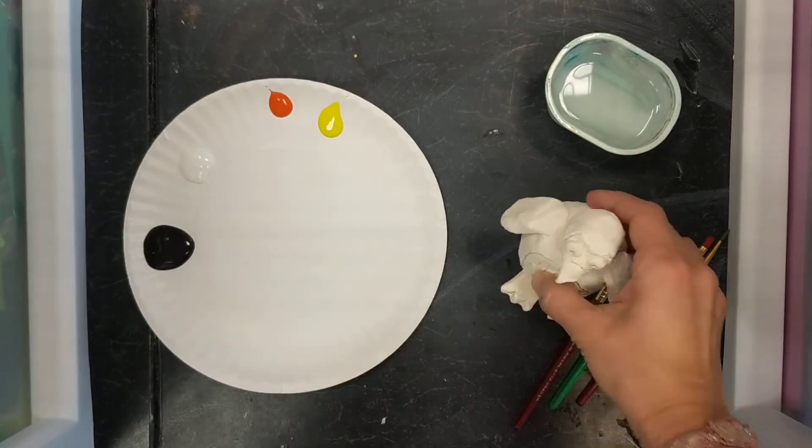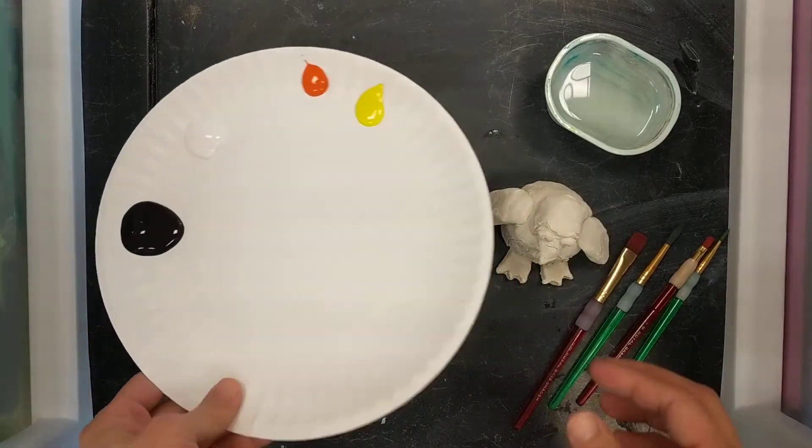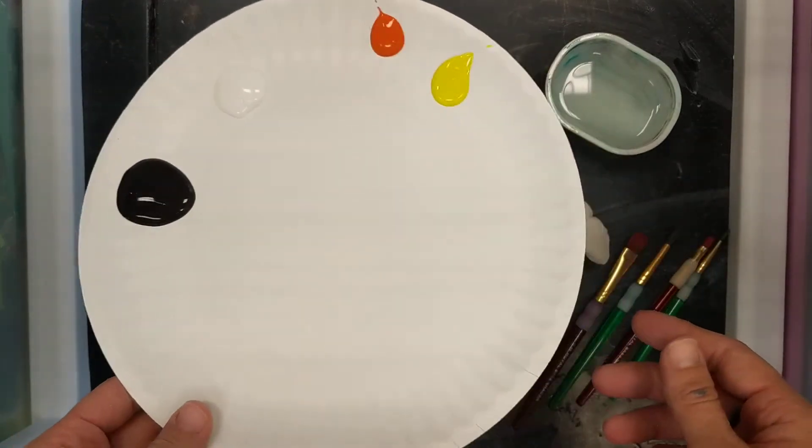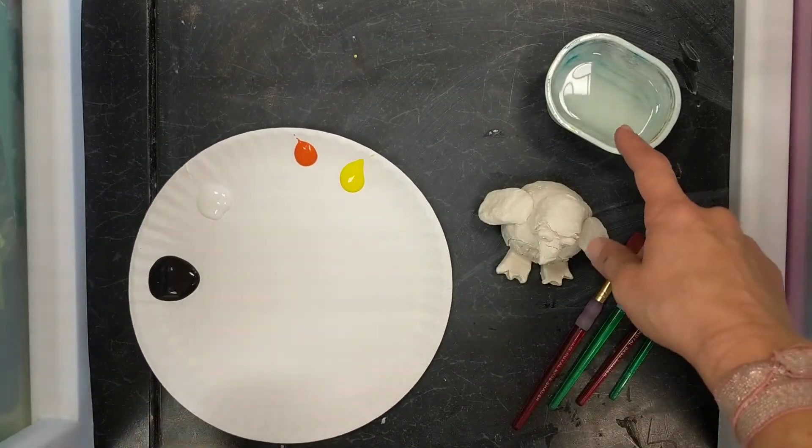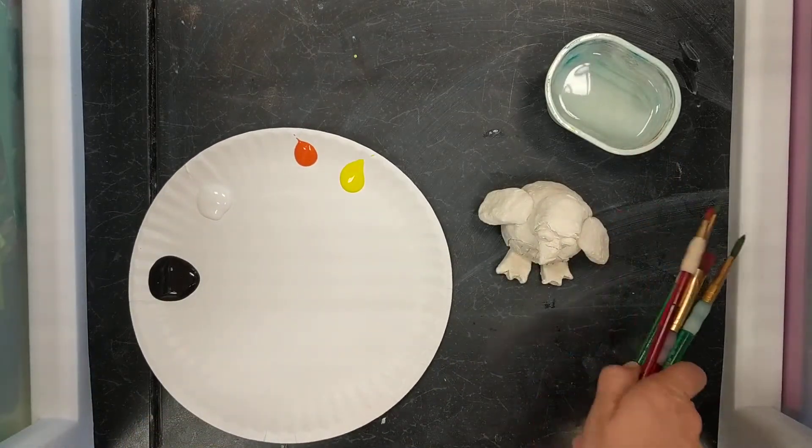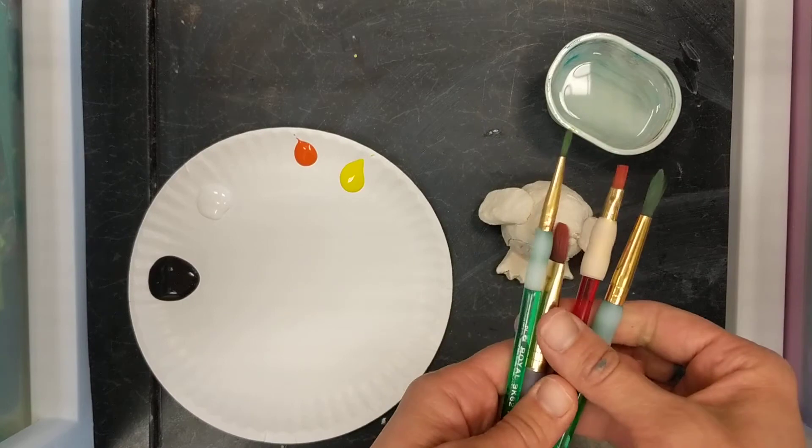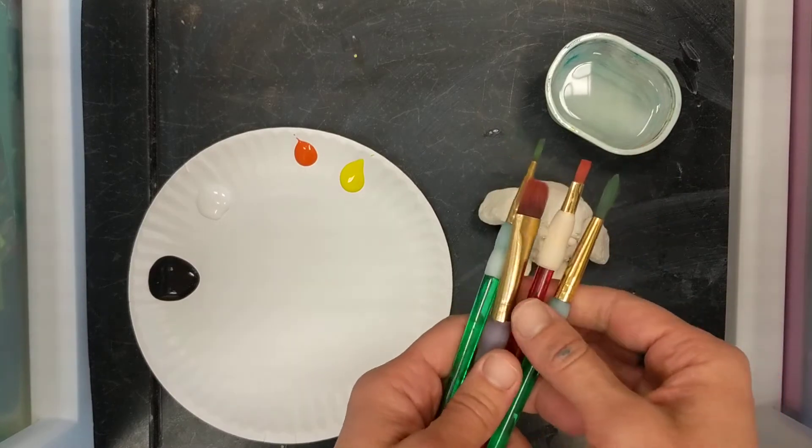You are going to need some supplies. You're going to need paint for the color of your animal, so think about what color your animal would be, water to share at your table, and brushes.